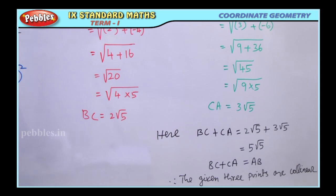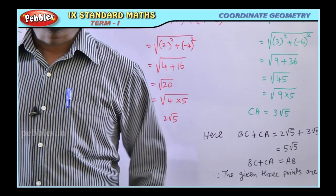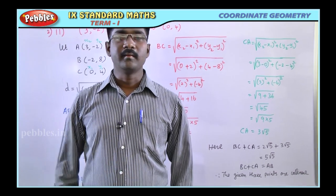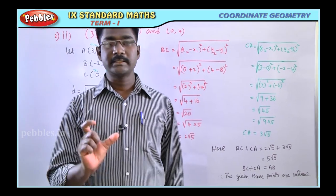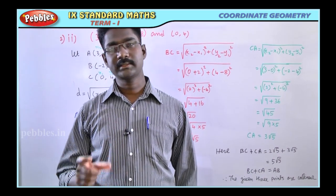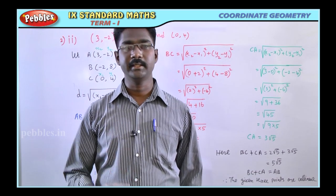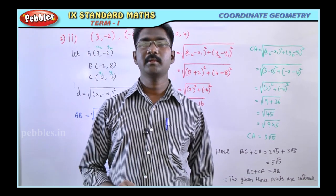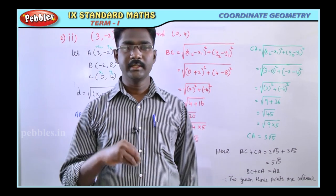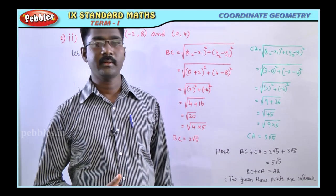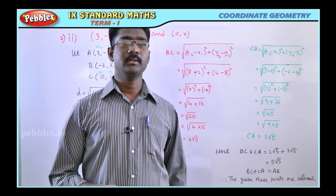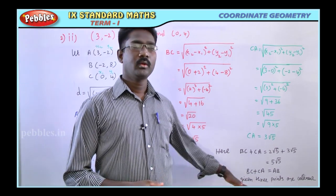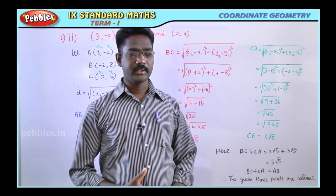Therefore the given three points are collinear. Collinearity has been proved: BC + CA = AB, meaning the sum of two segment distances equals the third. So the three points are collinear.